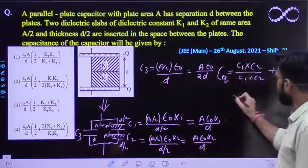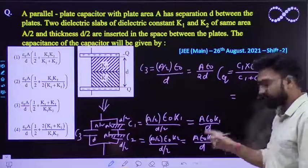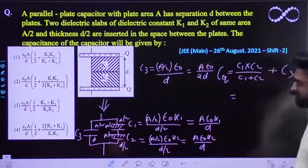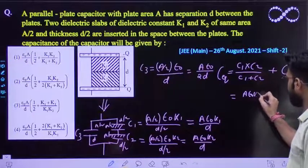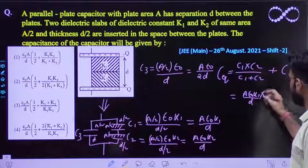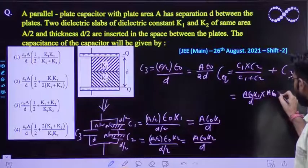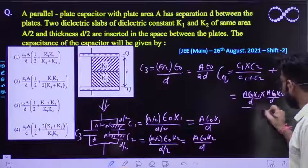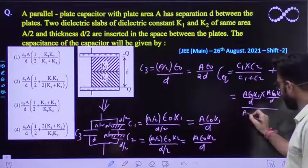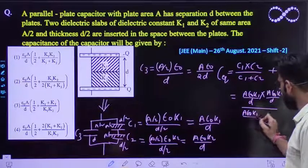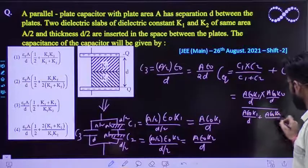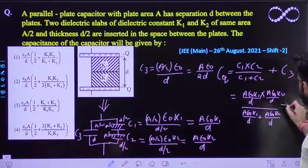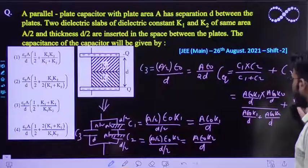Ab jaldi se value put karenge, value put karke saara hum solve karenge. So jaldi se dekho, C1 kitna hooga? C1 is a epsilon naught K1 by D. What is C2? C2 is a epsilon naught K2 by D. Divided by dono ka sum. So which is a epsilon naught K1 by D plus a epsilon naught K2 by D. Plus C3, which is a epsilon naught by 2D.